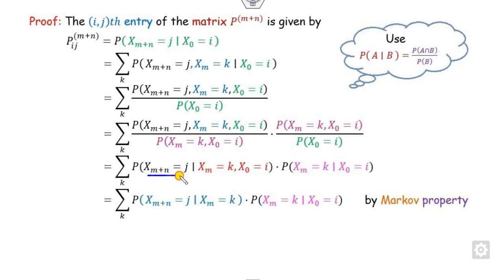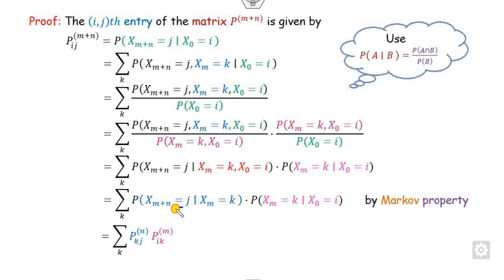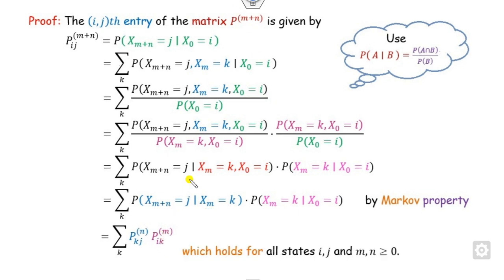Using the Markov property, the future states are independent of the history given the current state. We can write from k to j with step length n, and from i to k with step length m. This completes the simple proof of the Chapman-Kolmogorov equation, which holds for all states i, j and step lengths m and n.